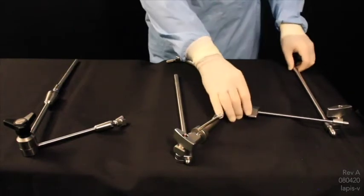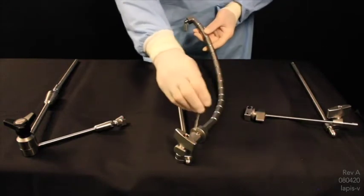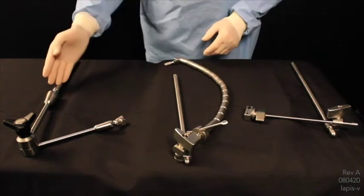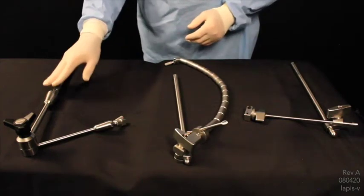Our instrument holder has most rigidity. Our flex arm gives some rigidity that can be adjusted here. It has most flexibility. And then our articulating arm gives both the flexibility and rigidity.